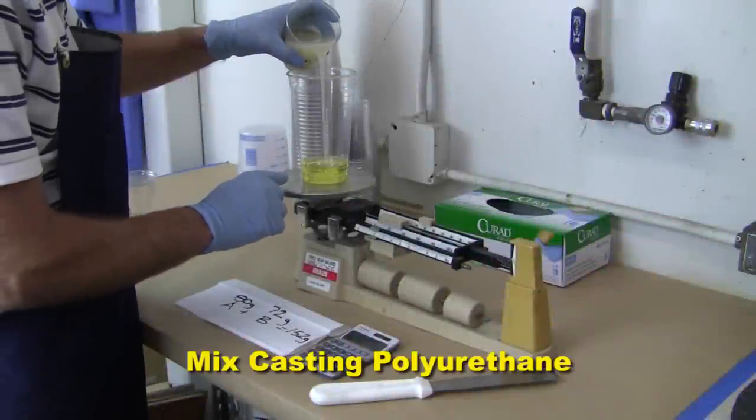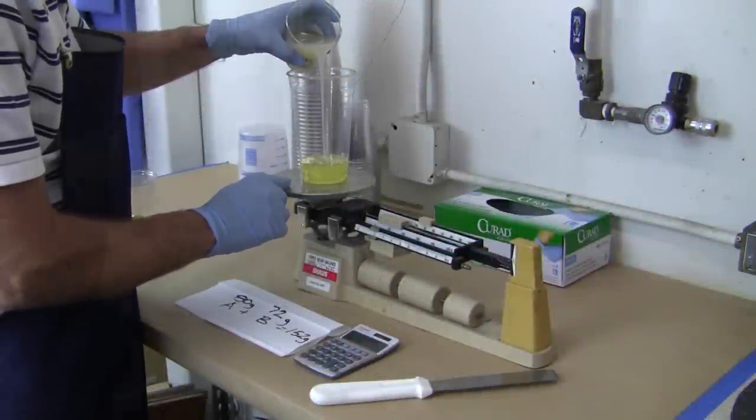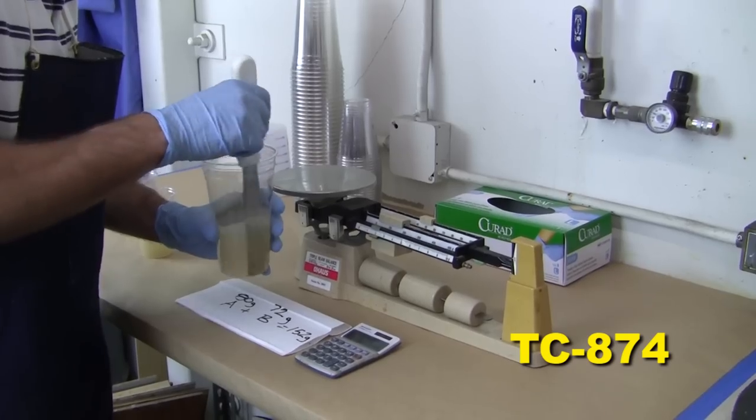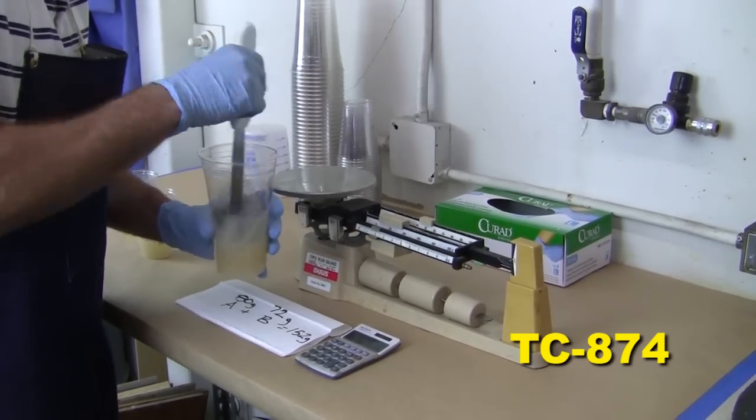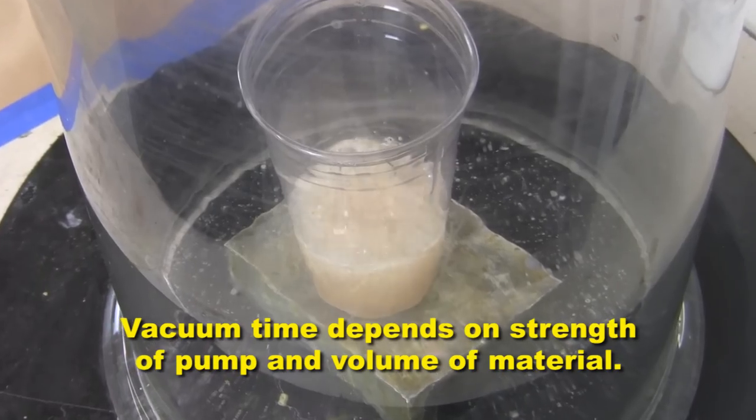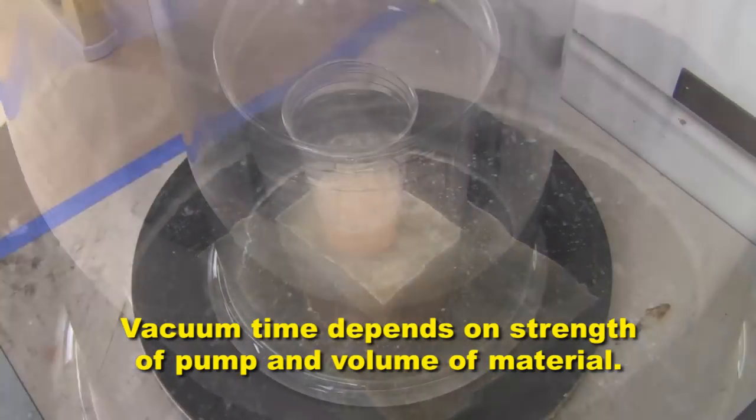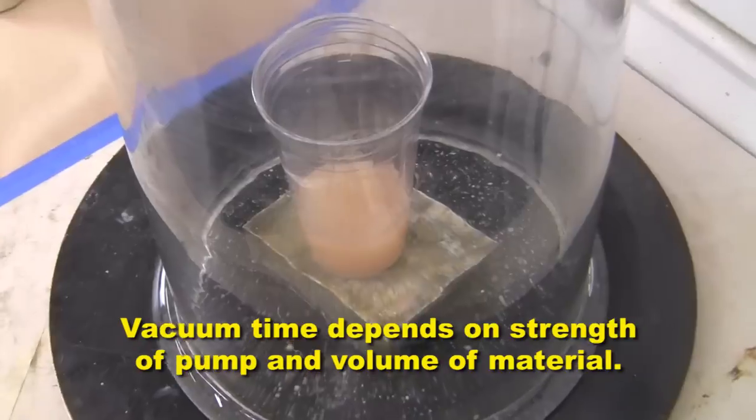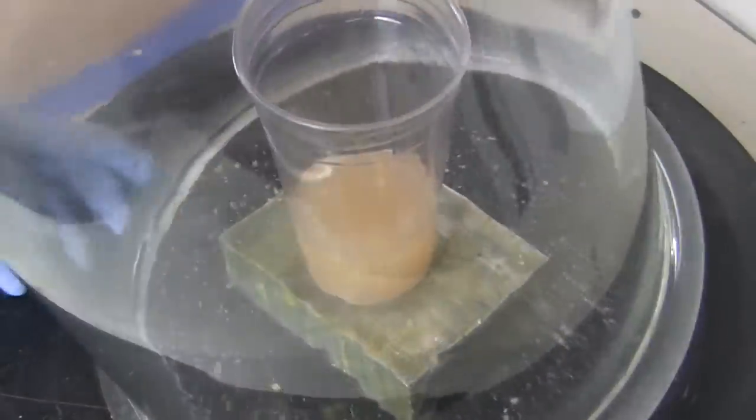Now, it's time to mix up our casting polyurethane. We've chosen a rigid, high impact material, TC874. Once the product is mixed, we place it in our vacuum chamber to remove the air bubbles. After 30 to 40 seconds, we can stop the vacuum and remove it from the chamber.